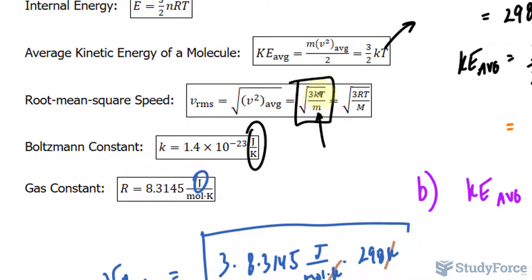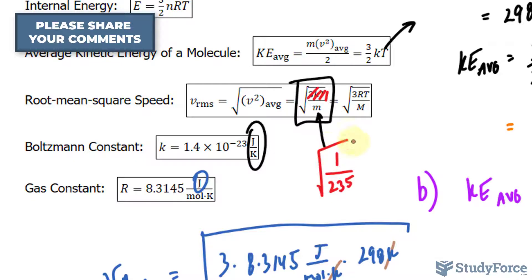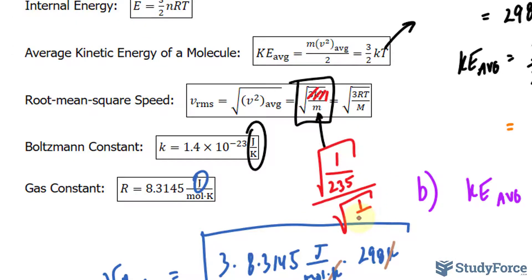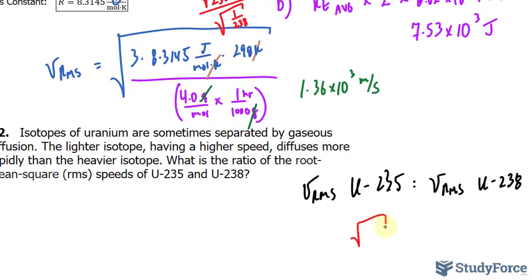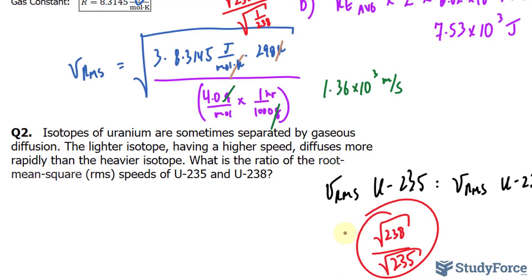Because these three factors, 3, k, and t, are going to be the same in both calculations, you can make them into one. So you would have 1 over 235 divided by the square root of 1 over 238. Eventually, that reduces down to the square root of 238 over the square root of 235. Calculating this should give you the ratio of the root mean squares for both of these isotopes.